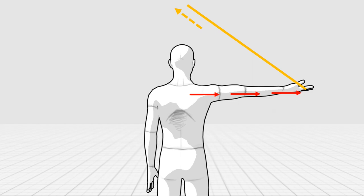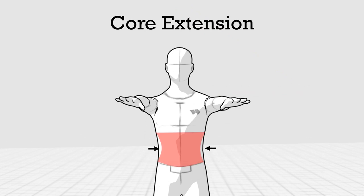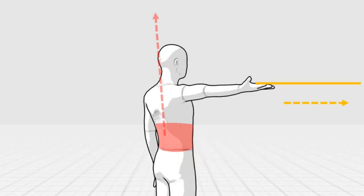Start by placing a light resistance band in front of you. Squeeze the waistband around your torso to counterbalance the band resistance at the front.